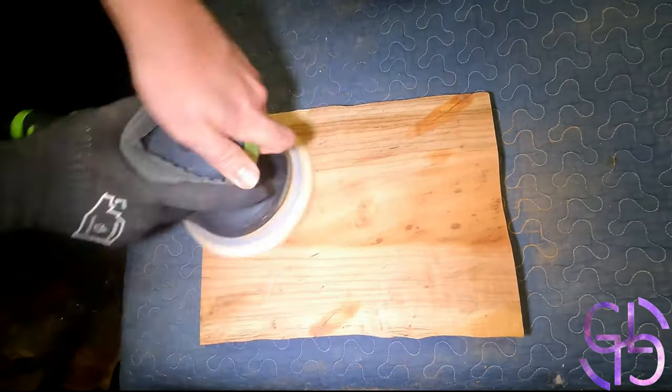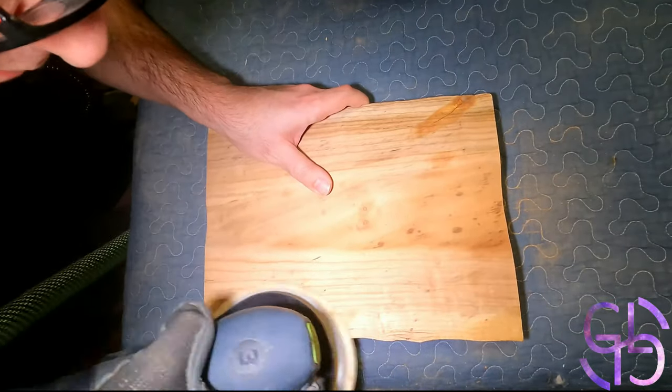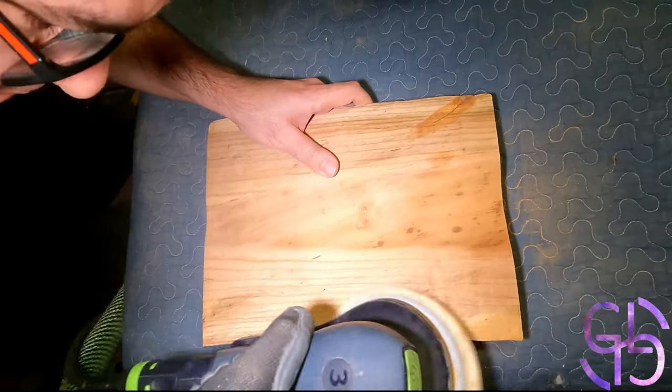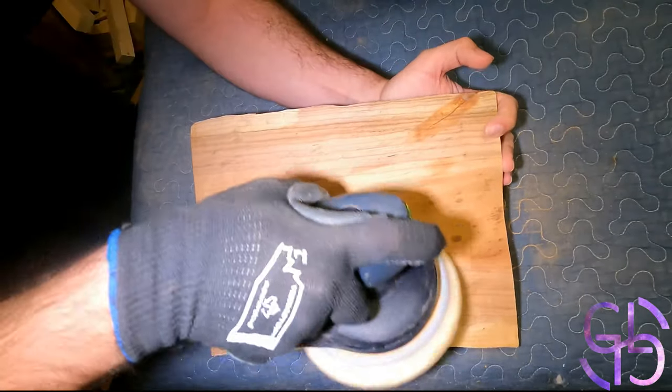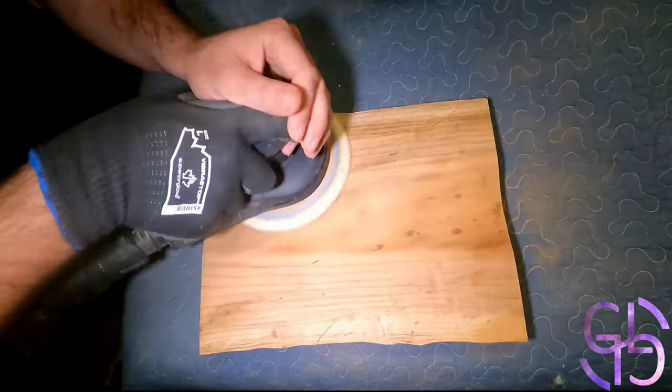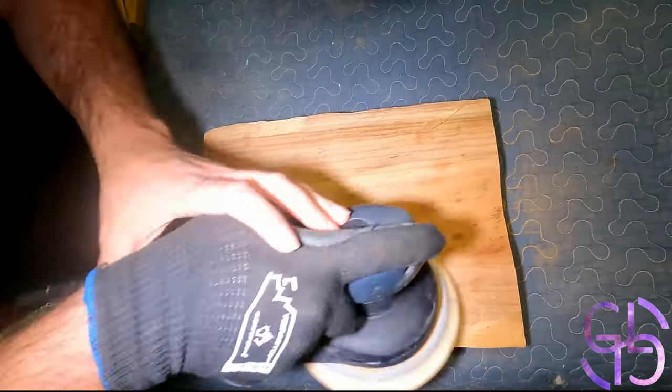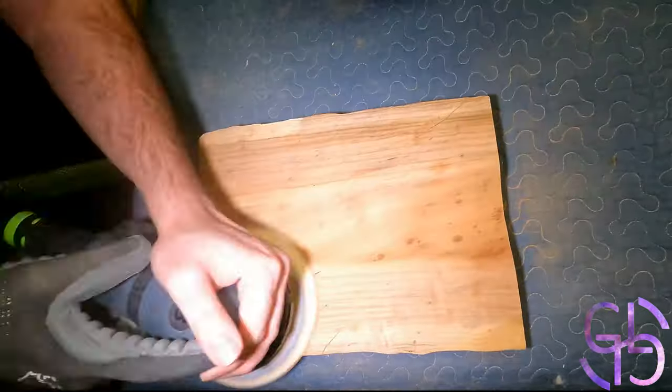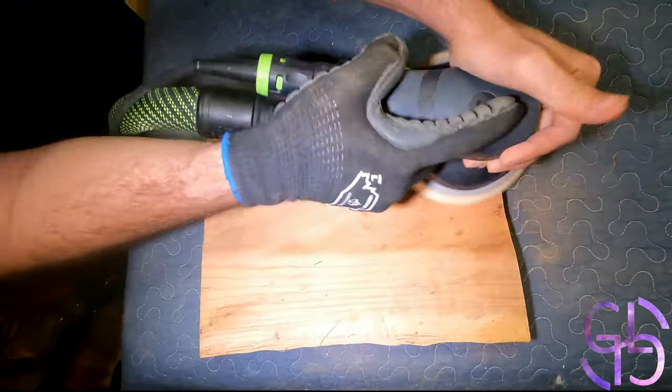First start off working on the imperfections left from the glue and then move on to actual sanding. I always start off with 80 grit and then slowly move up to 800 grit. I use the first 80 to 150 grits to give the piece the shape that I want and then afterwards I just enter my zen state and go all the way up to 800 grit.